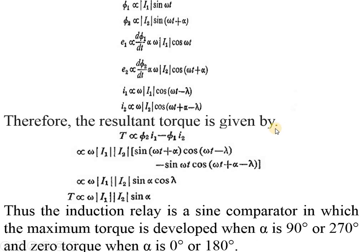Whereas i2 is directly proportional to ω I2 cos(ωt + α - λ). Therefore the resultant torque is given by T ∝ φ2 i1 - φ1 i2. By putting all the values together, the equation becomes T ∝ ω I1 I2 [sin(ωt + α) cos(ωt - λ) - sin ωt cos(ωt + α - λ)].